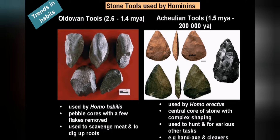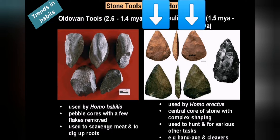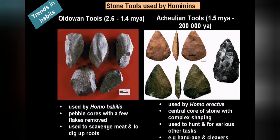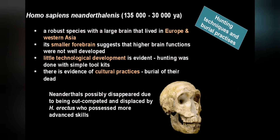Homo erectus did exactly the same thing - they would also take stones and shape them, but you can see in the picture they made much more of an effort. Their rocks are sharpened and shaped much more precisely. You can see the front, side, and back views of some of these tools. They actually attached these rocks to sticks to make simple hand axes. It's theorized that Homo erectus evolved into Homo neanderthalensis.